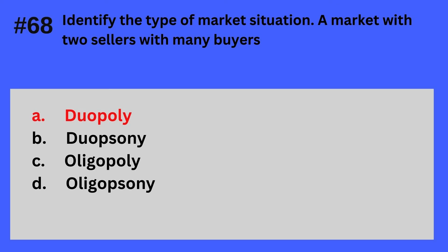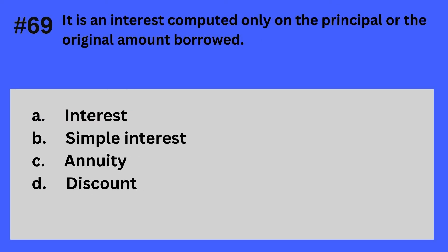Question 69. It is an interest computed only on the principal or the original amount borrowed. A. Interest, B. Simple interest, C. Annuity, D. Discount. The answer is B — Simple interest.